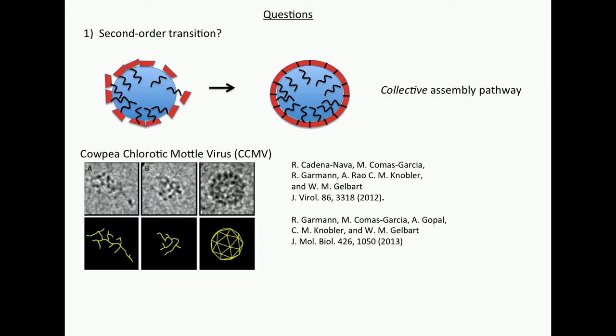So you can see there's a kind of orientational ordering transition from this aggregate to an ordered shell. And there are experiments. You heard about them from Bill Gelbart and Hagen. In UCLA, they did this for CCMV. And here you see the RNA outlined. The blue here is the RNA.